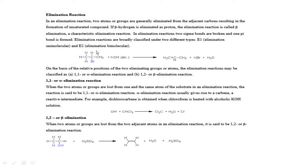For alpha elimination, take the example of CHCl₃ — chloroform. When a base reacts, it removes both the hydrogen as well as the Cl group from the same carbon. H and OH combine to form water, and Cl⁻ and CCl₂ product is formed. So this reaction is known as alpha elimination. On the basis of which position the eliminating group is removed from, there are two types: alpha elimination and beta elimination.